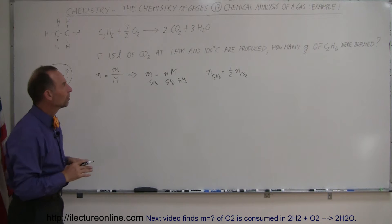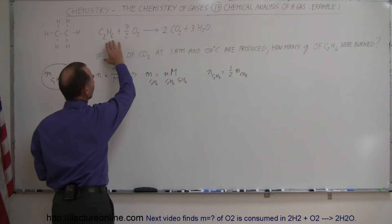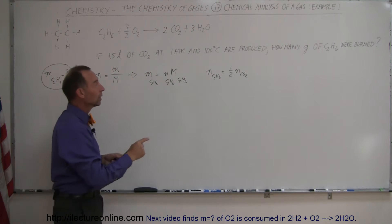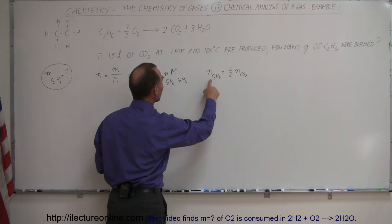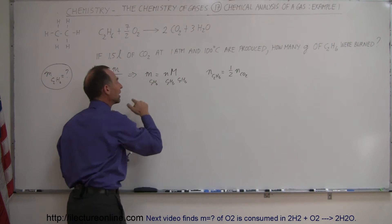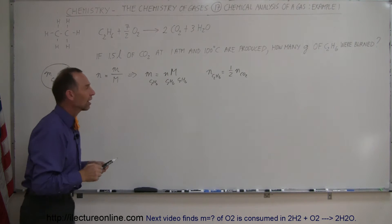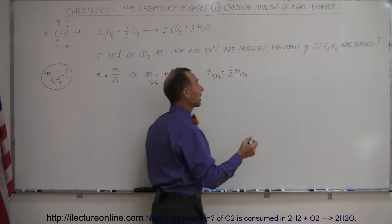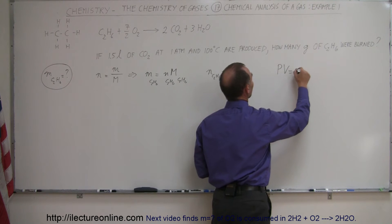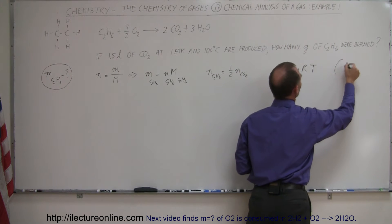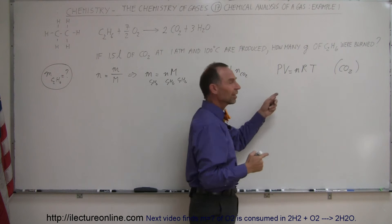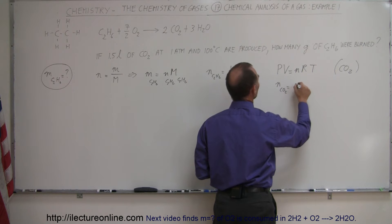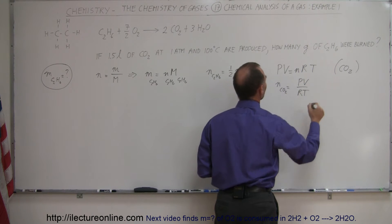The reason we want that relationship is because we're given the information about the carbon dioxide gas. From this information, we should be able to figure out how many moles of CO2 we had, then convert that to the number of moles of ethane, then plug that into the mass equation. To find the number of moles of CO2, we're going to use the ideal gas equation: PV equals NRT — this is for the carbon dioxide. Solving for N, we get N of CO2 equals PV divided by RT.